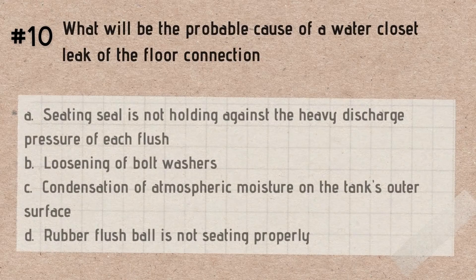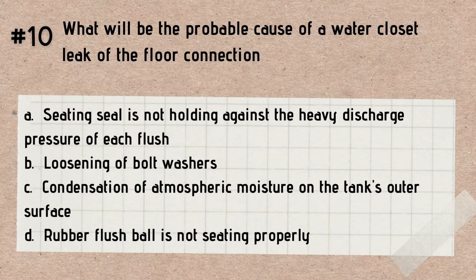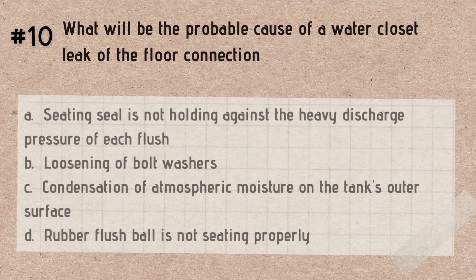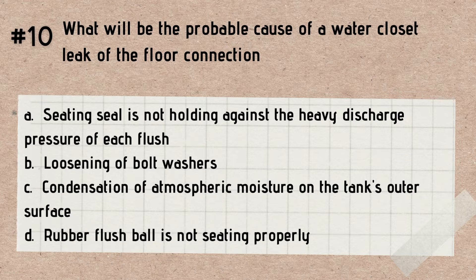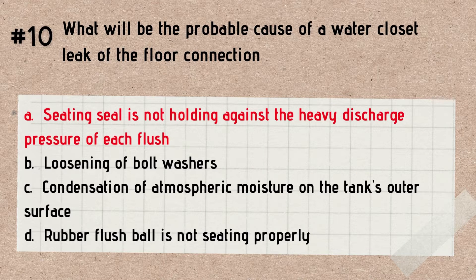Question number 10. What will be the probable cause of a water closet leak on the floor connection? A. Seating seal is not holding against the heavy discharge pressure of each flush. B. Loosening of bolt washers. C. Condensation of atmospheric moisture on the tank's outer surface. D. Rubber flush ball is not seating properly. Answer: Seating seal is not holding against the heavy discharge pressure of each flush. If the seating seal is not holding against the heavy discharge pressure of each flush, there will be a water closet leak on the floor connection.